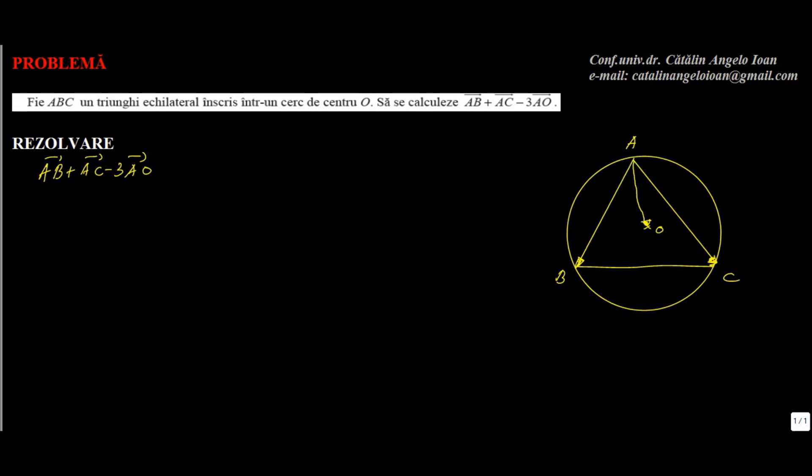Vom prelungi pe AO până taie pe BC. Unde îl taie? Fiind triunghi echilateral, AO care unește centrul cercului cu vârful triunghiului are toate proprietățile: este mediană, mediatoare, bisectoare, înălțime. Prin urmare, O fiind centrul cercului circumscris triunghiului, rezultă că O este și centrul de greutate.